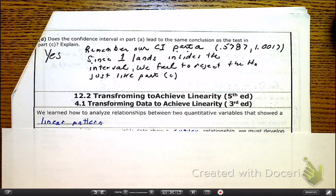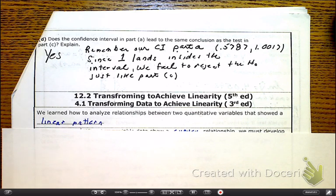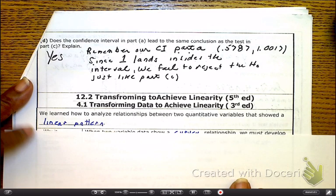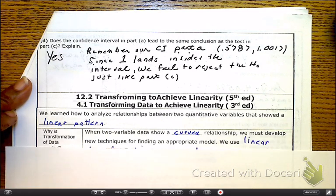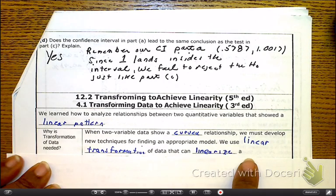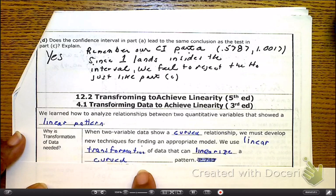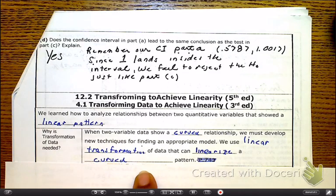Okay, take two. Now we've talked about when we have a straight line, everything's nice and linear, or at least close enough that we can claim it. But what happens when it's not? We learn to analyze it based on a linear pattern, but sometimes we have curves. When we have curves, we're going to have to do what's called linear transformation to linearize, to make those curves straight.